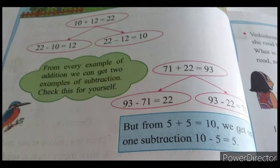But from 5 plus 5 equals 10, we get only one subtraction: 10 minus 5, and the answer is 5.